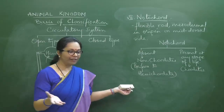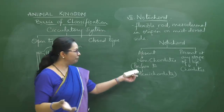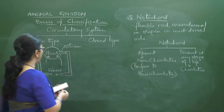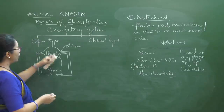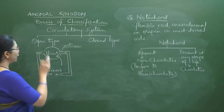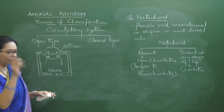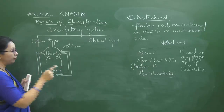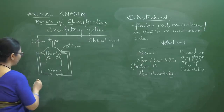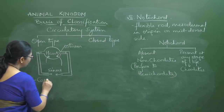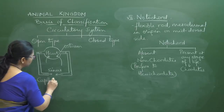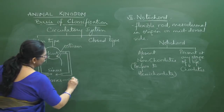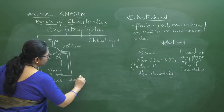The circulatory system can be open type or closed type. In open type, blood from the heart fills open spaces called sinuses and organs are directly bathed by blood. There is no capillary network — capillaries are totally absent. Blood returns to the heart through small openings called ostia on the heart. Examples of open type: Arthropoda, Mollusca (most), Echinodermata, and Hemichordata.